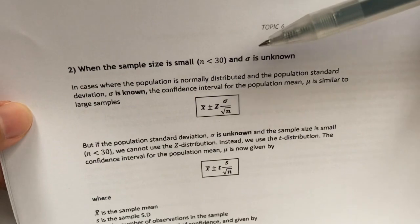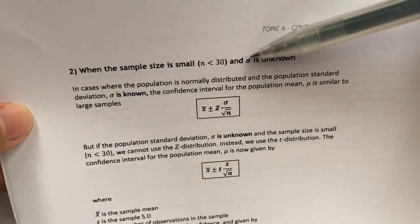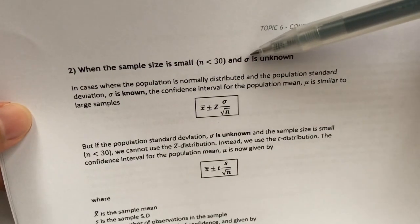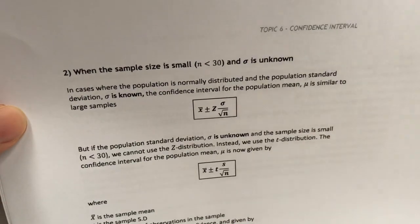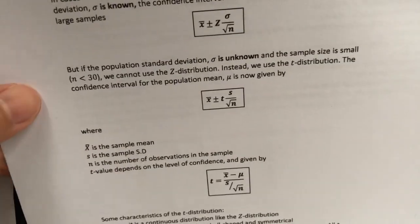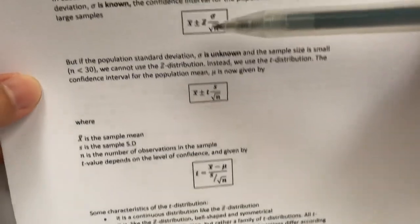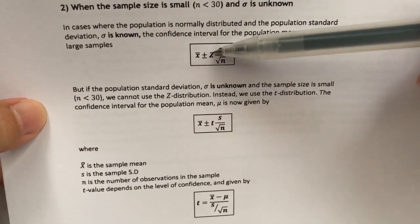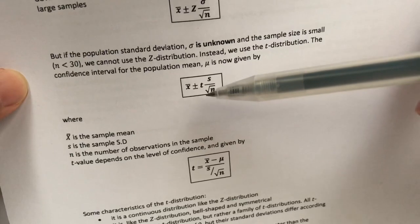Usually when the sample size is small, we don't know what sigma is. Sigma is the population standard deviation. So how can we find the confidence interval? We just need to adjust the formula a little. Number one: instead of using the Z distribution, we now use the T distribution.